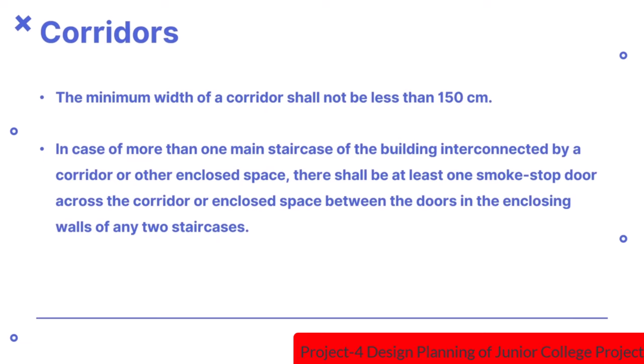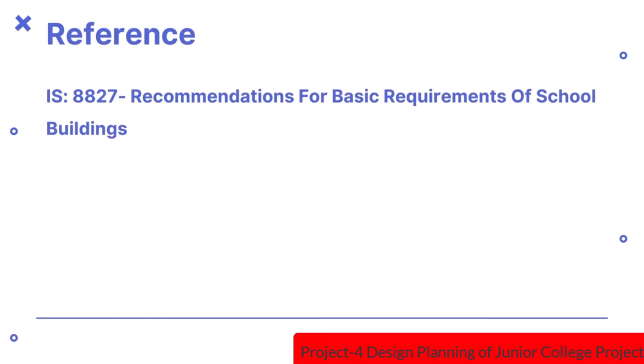The minimum width of a corridor shall not be less than 150cm. In case of more than one main staircase interconnected by a corridor or enclosed space, there shall be at least one smoke stop door across the corridor between the enclosing walls of any two staircases. The reference used for this video is IS 8827, Recommendations for Basic Requirements of School Buildings.